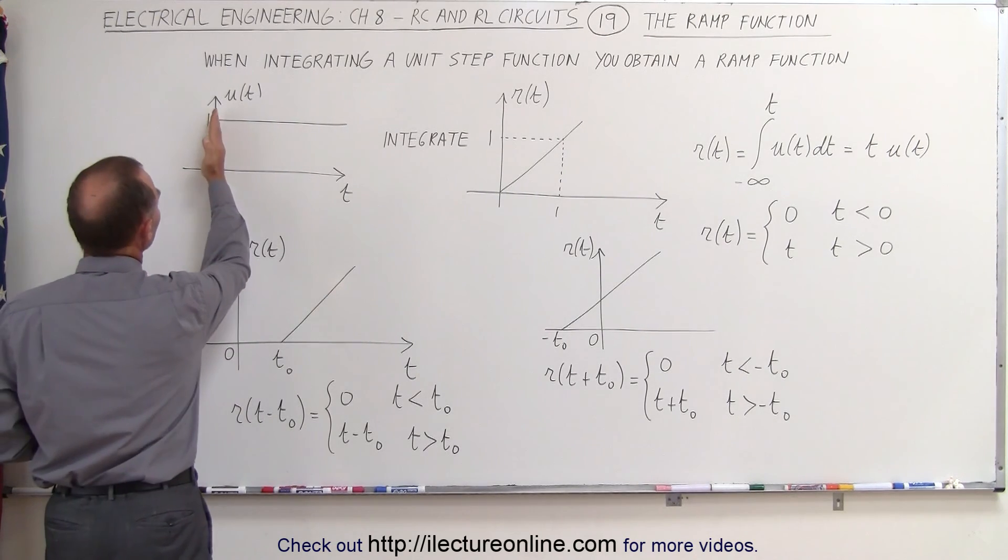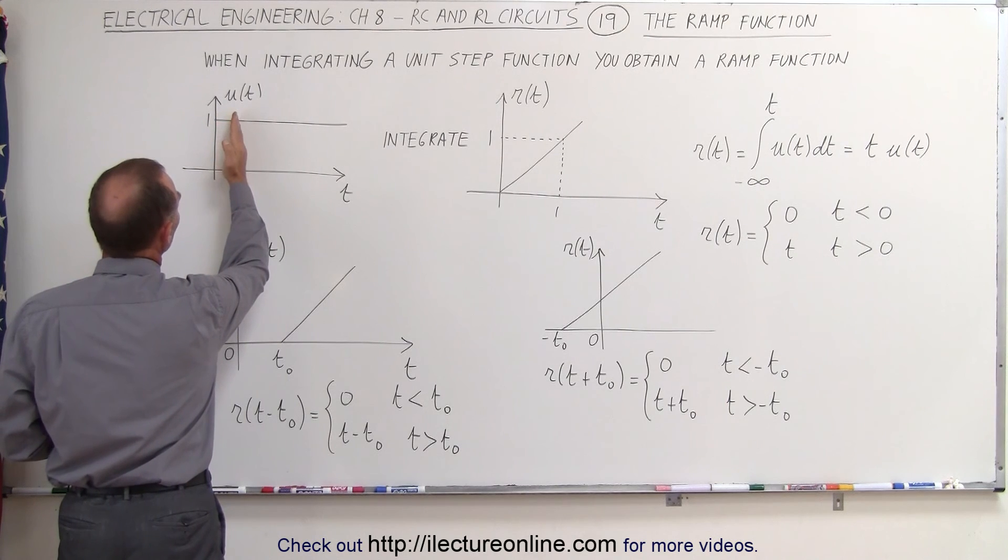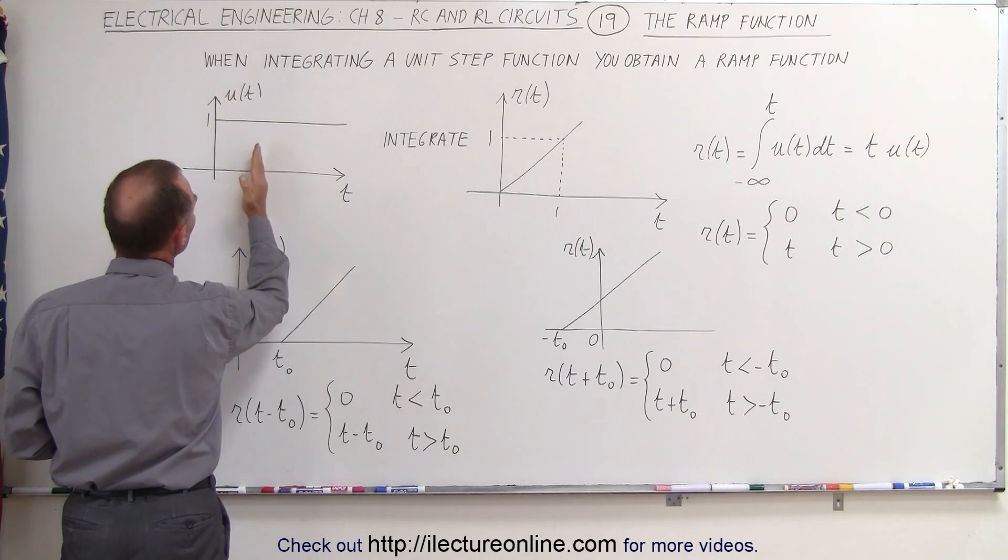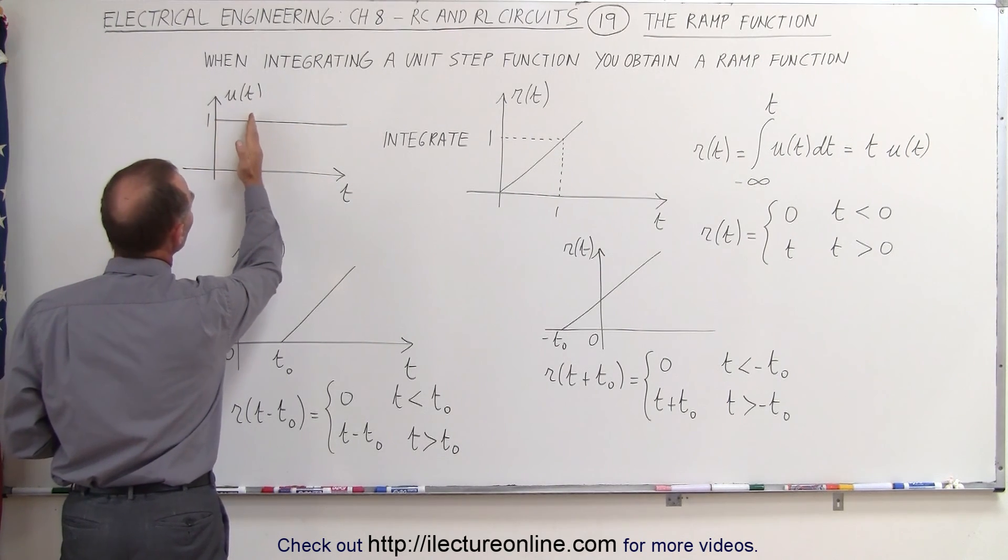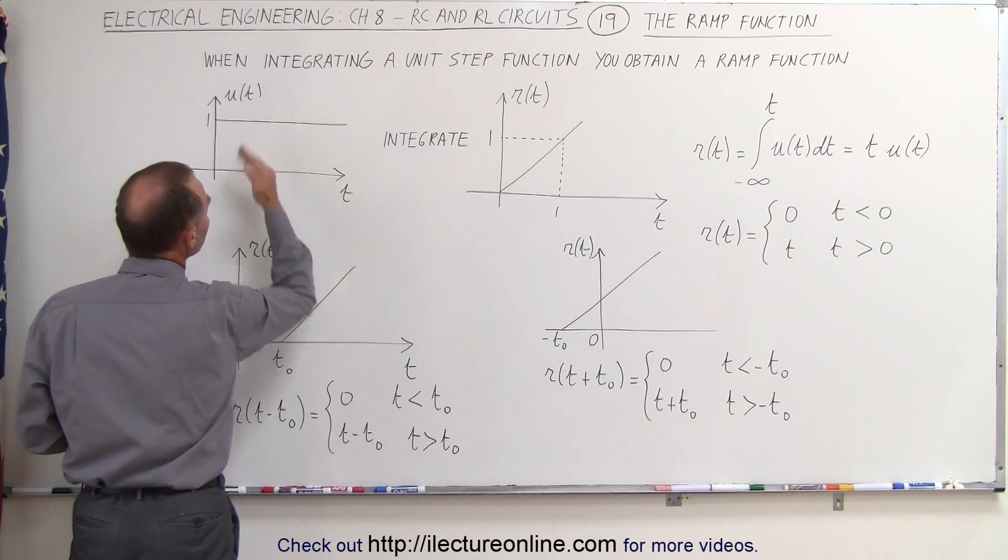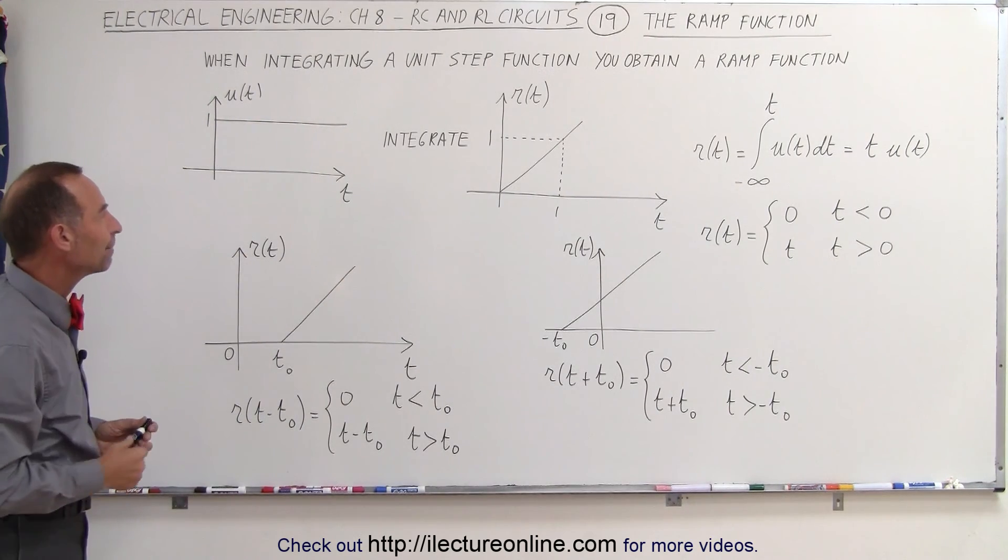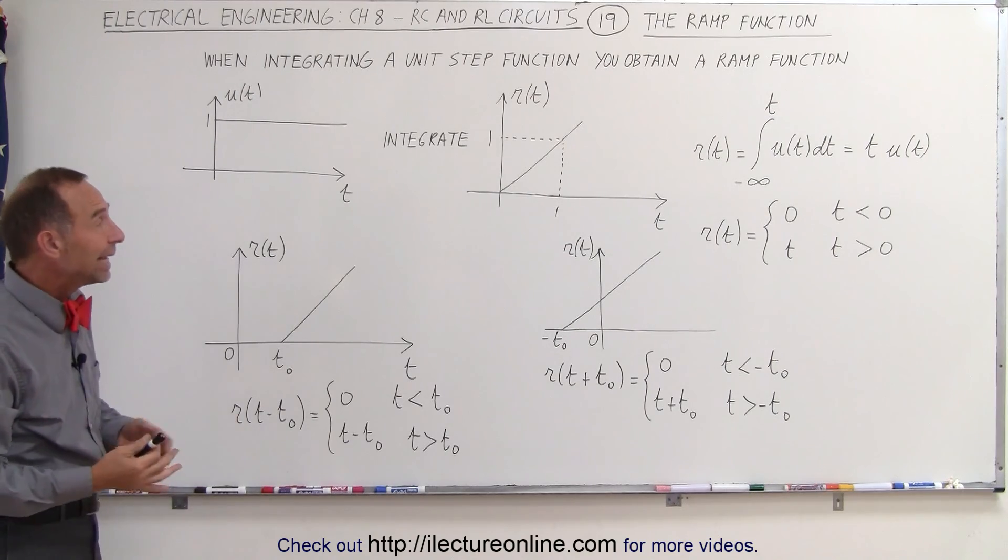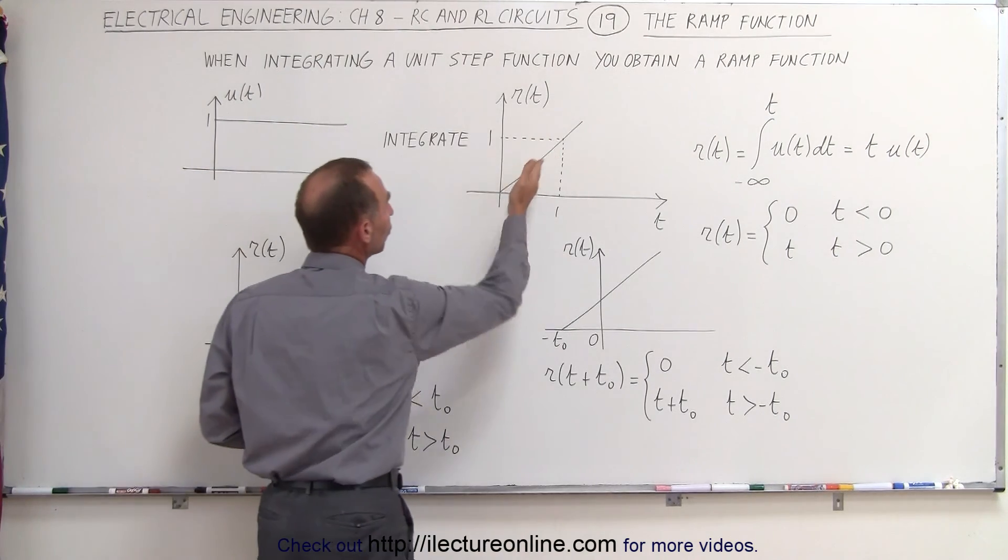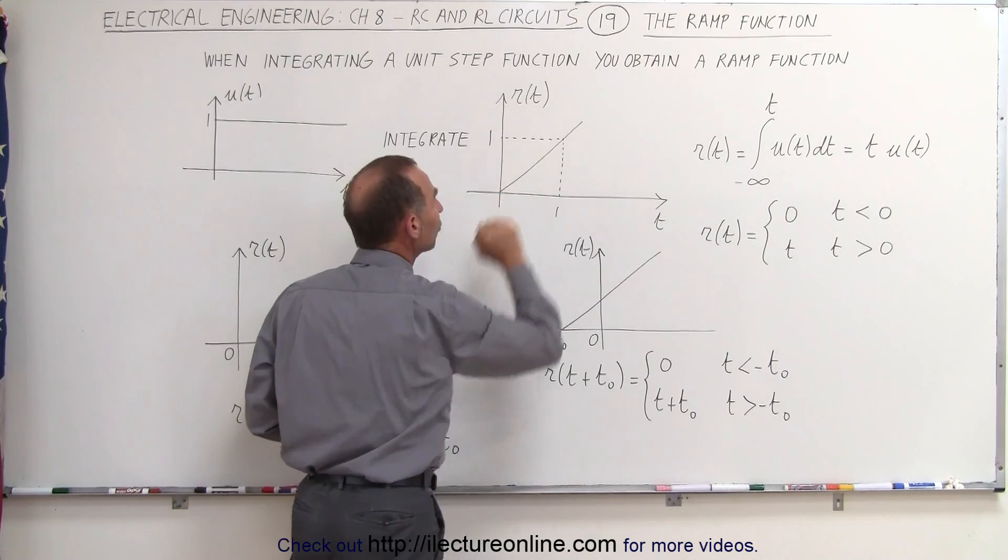If we draw a line from here we keep on moving it to the right, notice as time continues the area underneath the unit step function increases proportionally to the elapsed time. That results in a ramp function or a function with a steady slope.